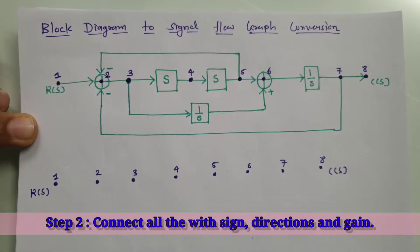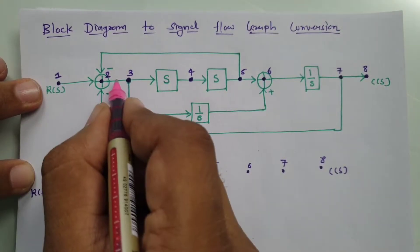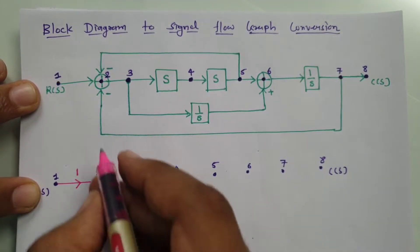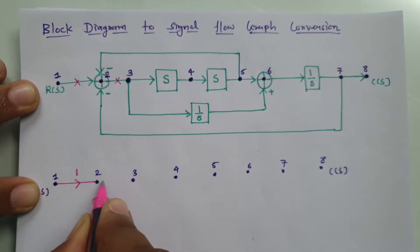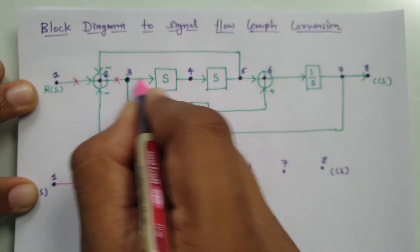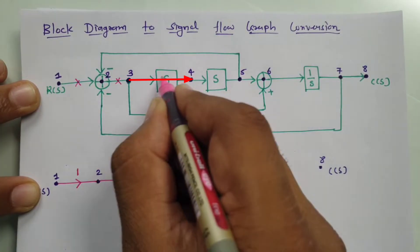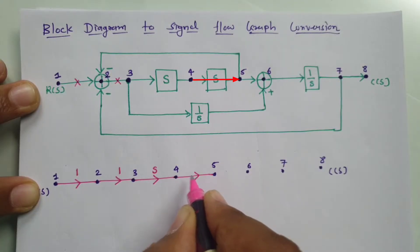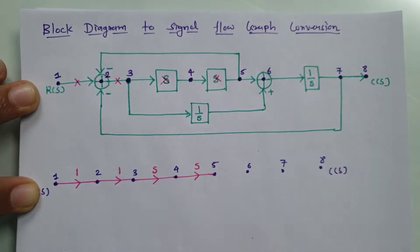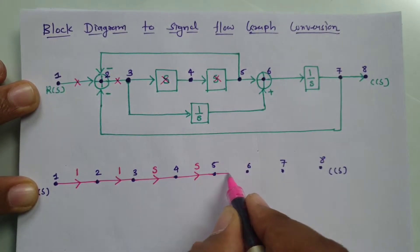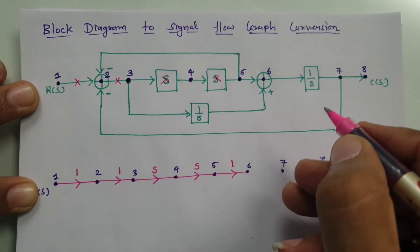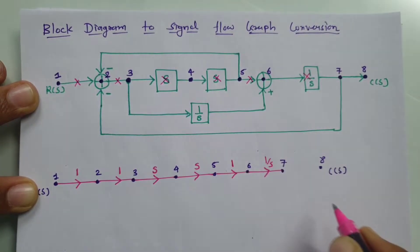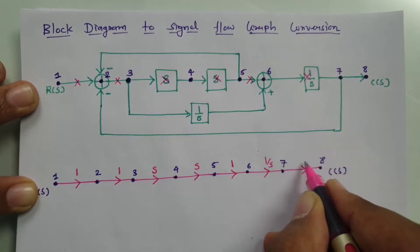Now I'll be connecting all the elements one by one. Between node one and node two, nothing is there, so direction is forward and gain is one. Between two and three, direction is forward and gain is one. Between three and four, direction is forward and gain is S. Between five and six, nothing is there, direction is forward and gain is one. Between six and seven, direction is forward and gain is 1/S. Between seven and eight, direction is forward and gain is one.